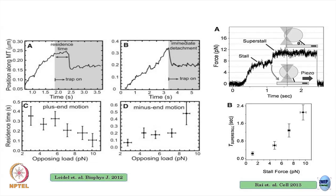These are experimental trajectories — position along the axis as a function of time. You let your cargo walk along the microtubule. Once it stalls, in an optical trap setup, you move the optical trap to control the force that this cargo feels. Then you observe how long the motor stays bound under this force before it unbinds. You measure this many many times and measure the average residence time as a function of the force applied.